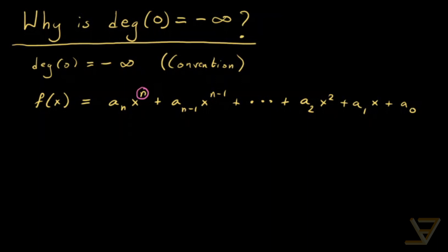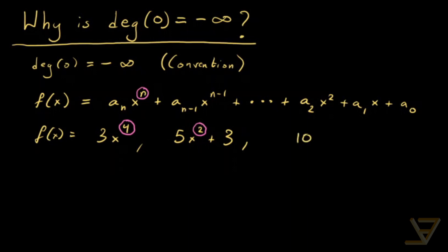So if f(x) = 3x^4, the degree is four. If f(x) = 5x^2 + 3, the degree is two. And if f(x) = 10, just a constant, then the degree is zero because that's 10 times x^0 — there's an invisible x^0 there. But the problem is: what if f(x) equals zero? We could say the degree is zero in that case, but some things don't quite work out, and we'll see exactly why.